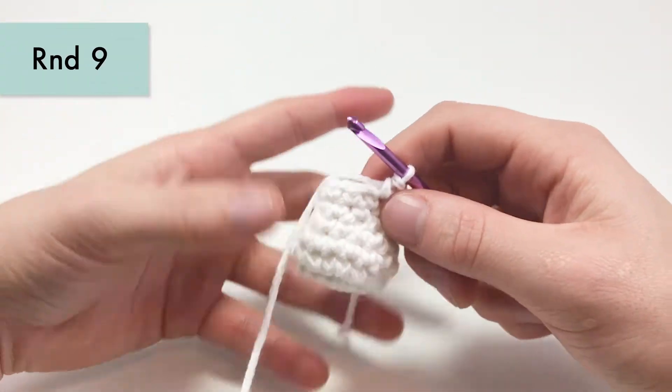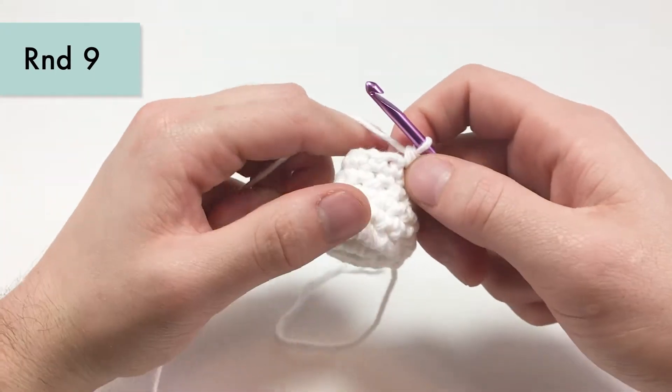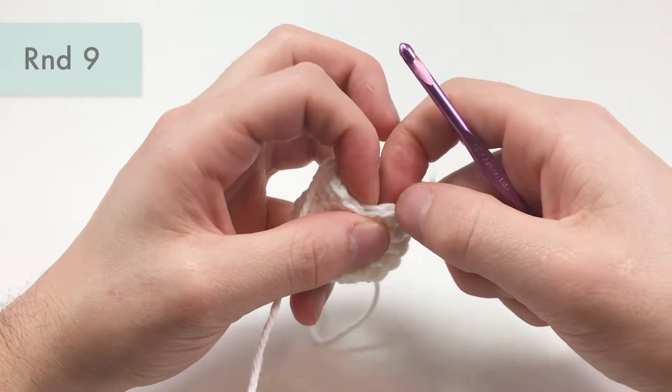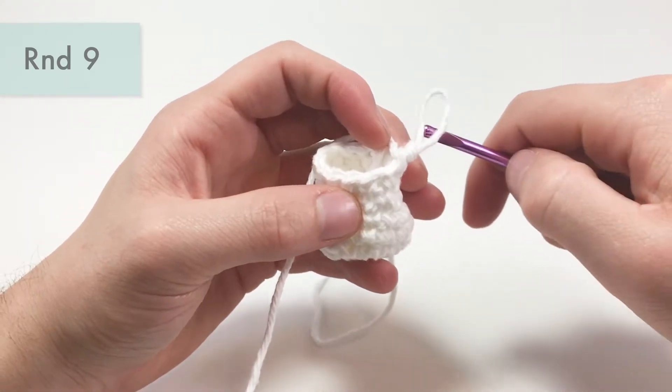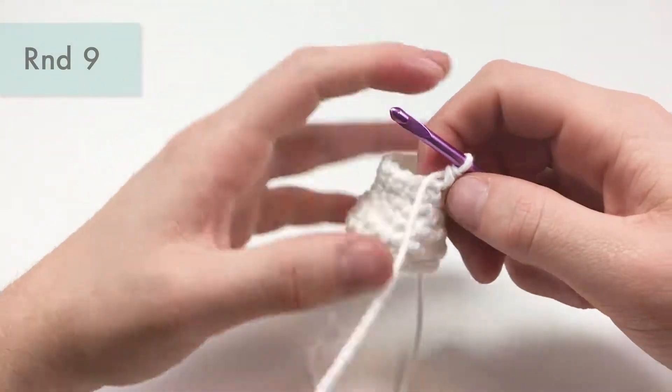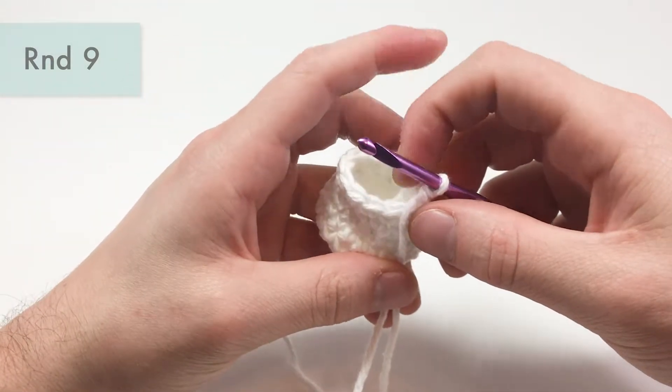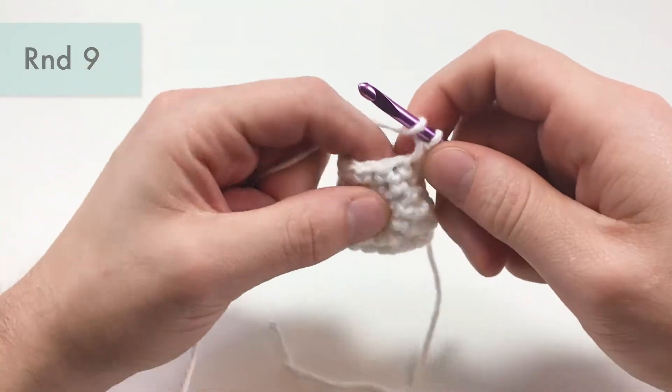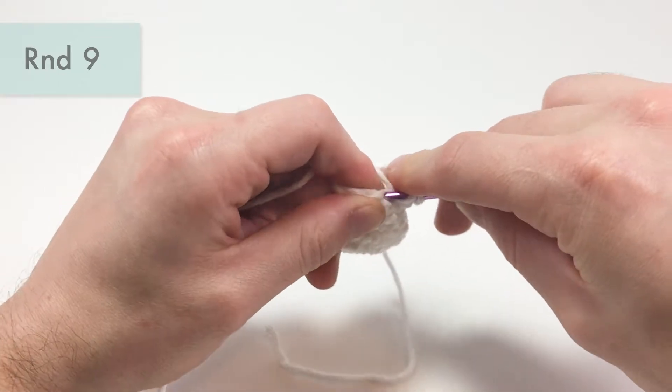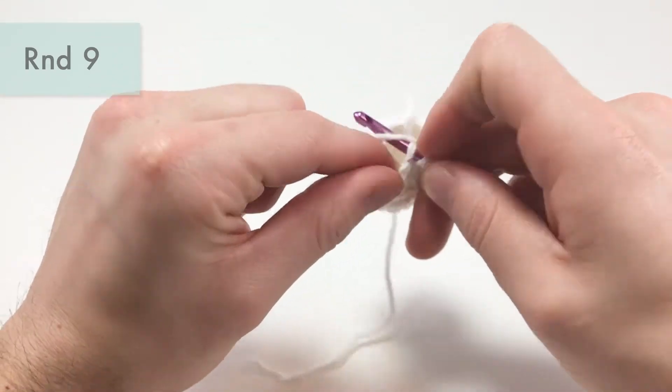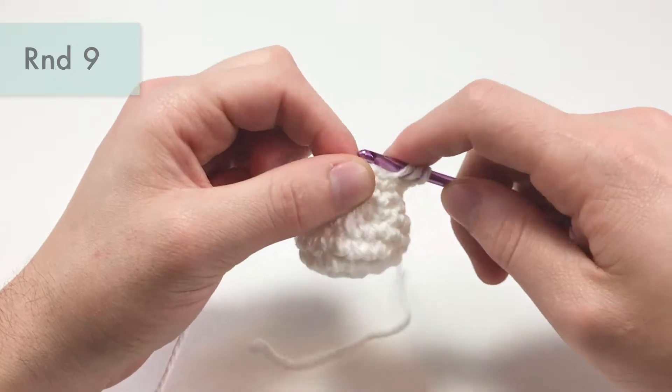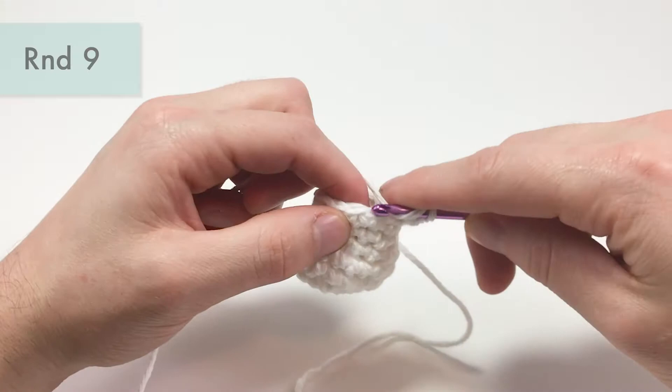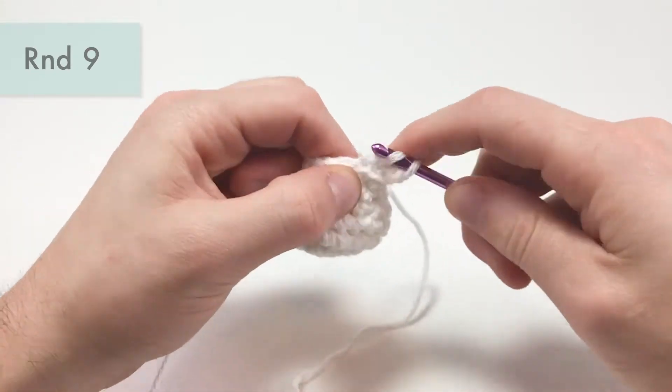For round nine, and the last round for our hat here, you want to work only into the back loops, meaning the loops furthest away from you right there. And we'll be half double crocheting into each stitch all the way around working only in the back loops. So if you didn't know what a half double crochet was, you yarn over, go into the next stitch. In this case, we're working only in the back loop, meaning this one furthest away, and pull loop through, and then pull loop through all through on the hook. And you'll be doing that into each stitch all the way around, that should be 12 half double crochets total.